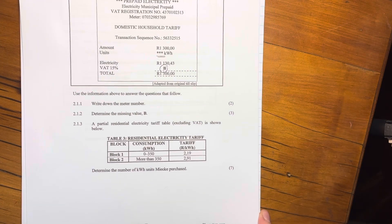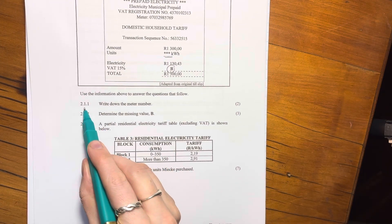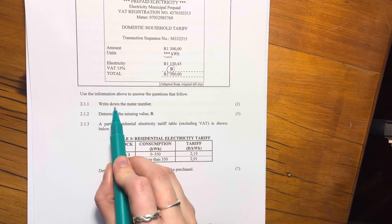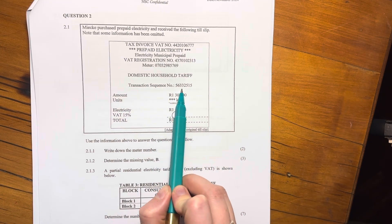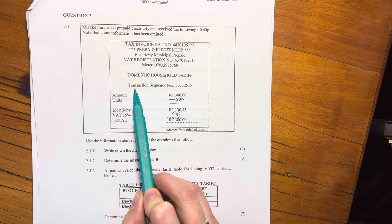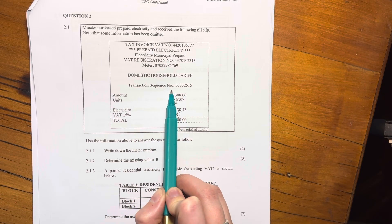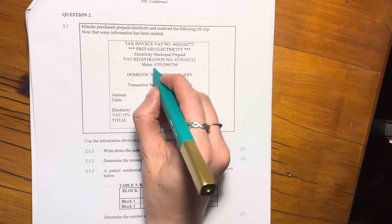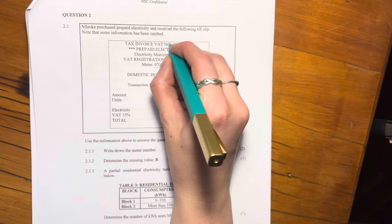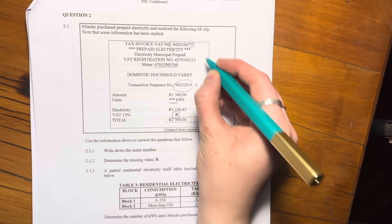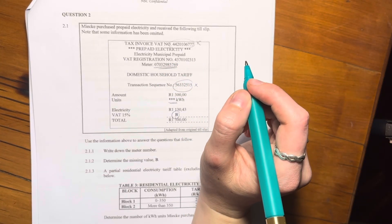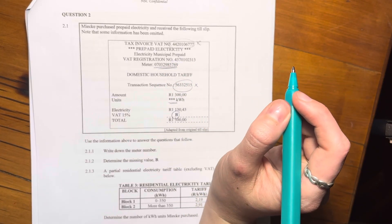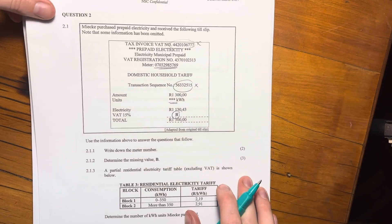Right, let's first go to 2.1.1. Write down the meter number. Okay, let's look over here. A lot of students would just say, oh, there's the meter number, but that's actually the transaction sequence number. The meter number is actually this one over here. So it's not the VAT number up here, and it's not that one. So it's not those two. It's the meter number over here. So be careful that you don't write down the wrong number just because you are trying to be quick, right? Just take it slow.